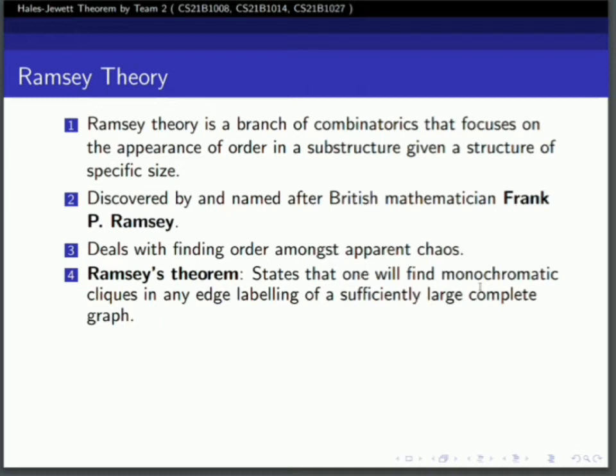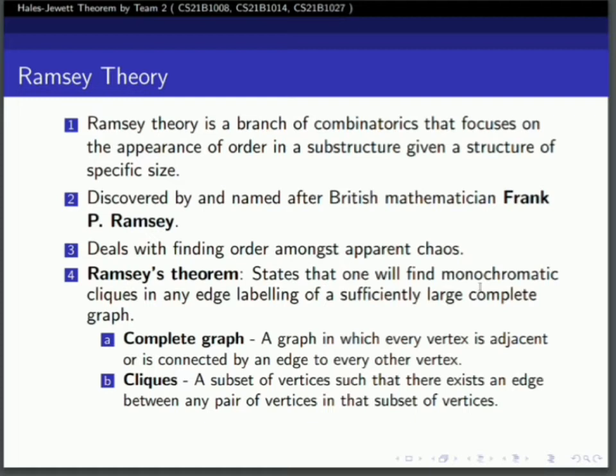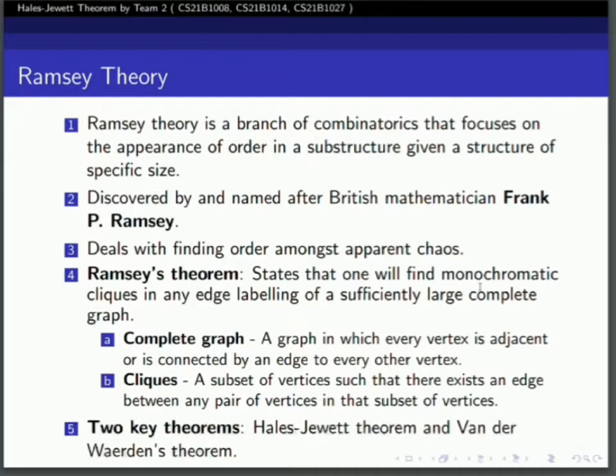Ramsey's theorem states that one will find monochromatic cliques in any edge labeling of a sufficiently large complete graph. A complete graph is one where every vertex is adjacent to every other vertex. Cliques are subsets of vertices such that there exists an edge between any pair of vertices in that subset.